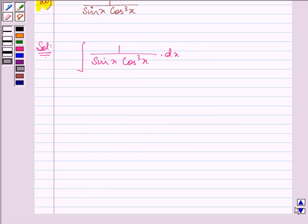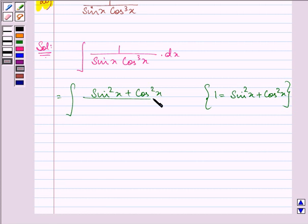Now we know that 1 can be written as sin square x plus cos square x. So in substituting it we have sin square x plus cos square x divided by sin x cos cube x into dx.